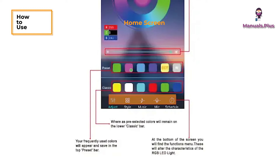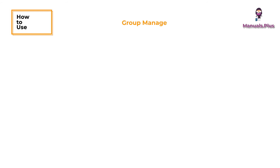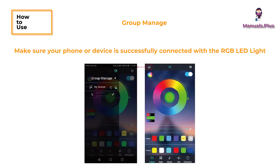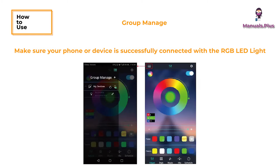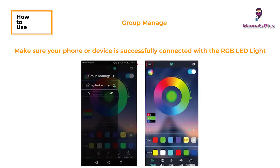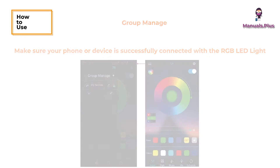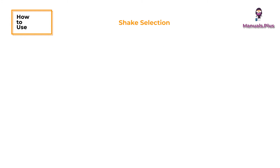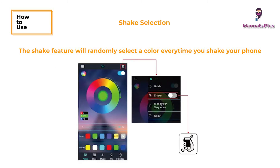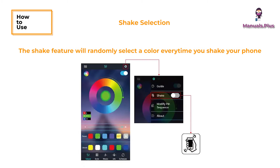In Group Manage, make sure your phone or device is successfully connected with the RGB LED light. The shake feature will randomly select a color every time you shake your phone.